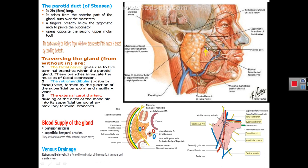The duct of the parotid gland also projects from the anterior border of the parotid gland and runs forward on the masseter muscle about a finger's breadth below the zygomatic arch. At the anterior border of the masseter muscle the duct turns medially to enter the oral cavity, perforating the buccal fat, then the buccinator muscle, then the mucous membrane, opening into the oral cavity against the upper second molar tooth.